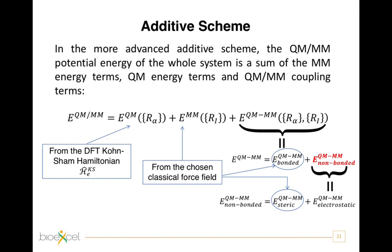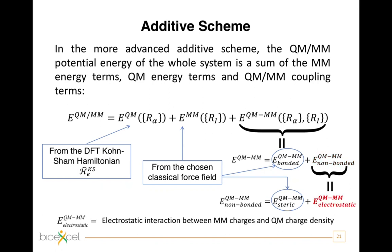E_QM/MM steric is usually described by a Lennard-Jones potential, and the parameters come from the force field used in the MM part. The rest of the non-bonded interactions — that is the interactions between quantum and classical atoms separated by three or more atoms in the topology — are included in the electrostatic term. This is really an interaction between classical partial charges in the MM region and the quantum charge density. But how is this term calculated in practice?